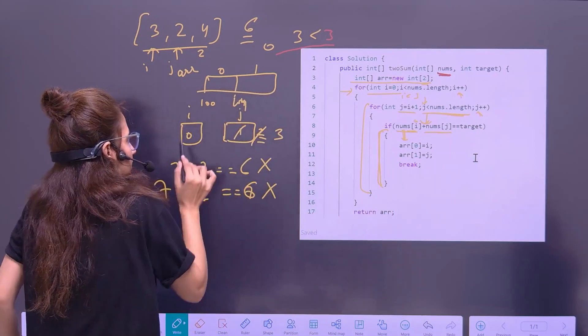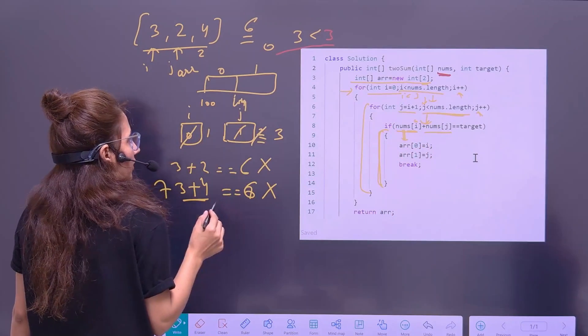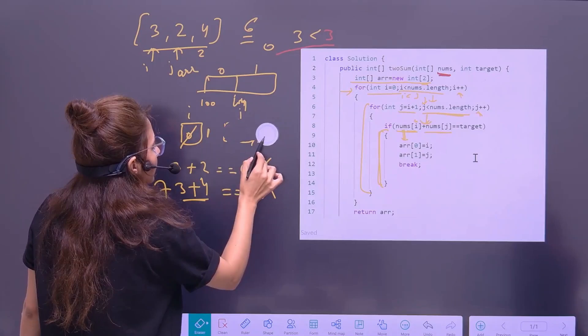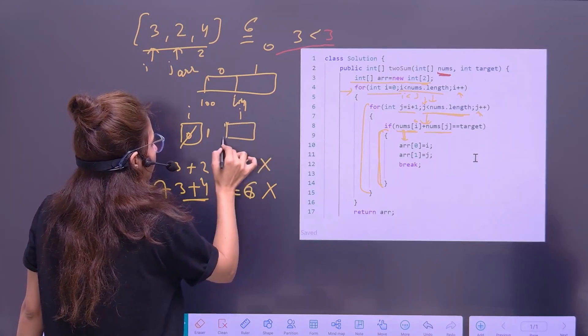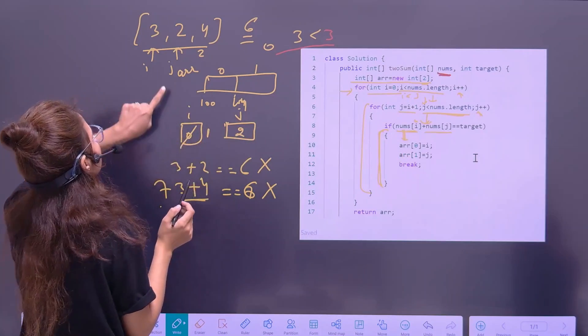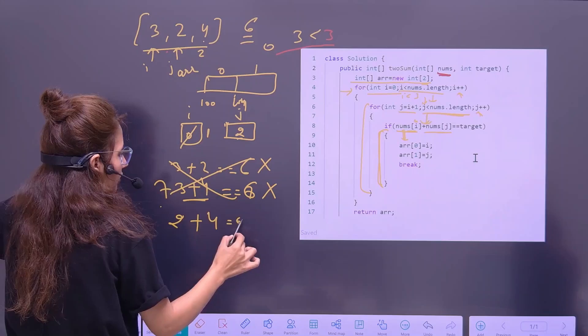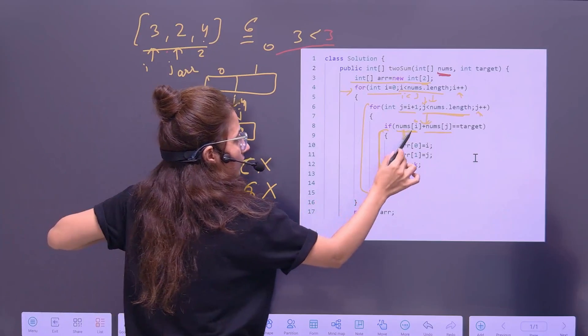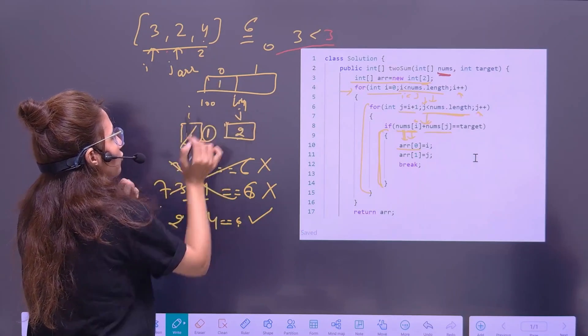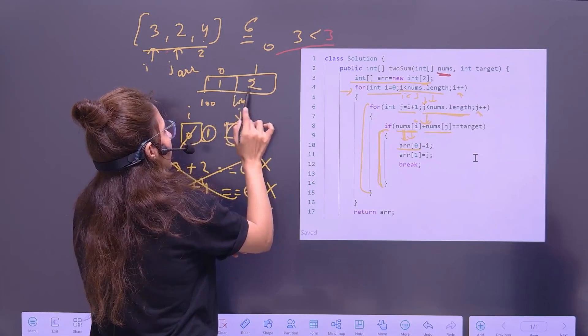Condition is not true. So out of this for loop. Means now the time is for i plus plus. Now i becomes 1. Same step would be repeated. Condition true. I less than this. Yes. Enter here. J becomes i plus 1. Now j becomes i is 1. So now j again would be initialized. And here j would become at this point of time 2. J is 2. Now again check. Num of i. I is 1. So num of 1 is 2. So again in next situation 2. Plus num of j. J is 2. That is 4. Is equal to 6. Equal to equal to 6. Yes. Condition true. Enter in this case. ARR of 0 is i. I is at this point of time 1. So here 1 would be assigned. J at this point of time 2. So j would be assigned. So the indexes are assigned to this ARR. And break.